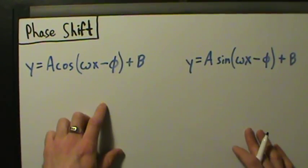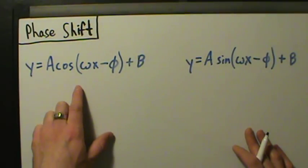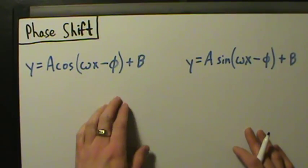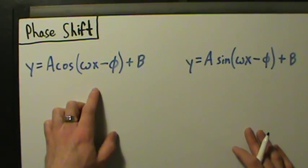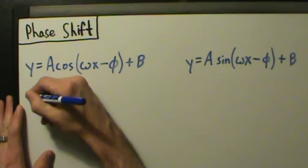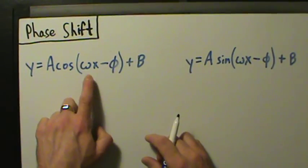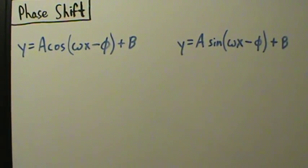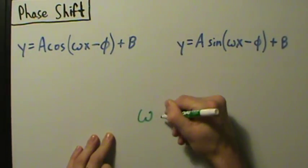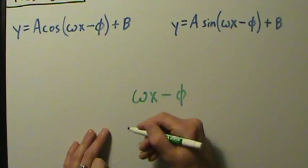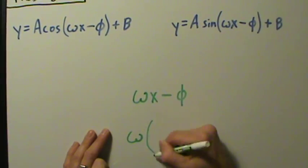We want to be careful because the phase shift is not exactly equal to phi. For horizontal shifts, you have to get x by itself first. So what we're going to do is factor out the omega from the expression omega x minus phi.